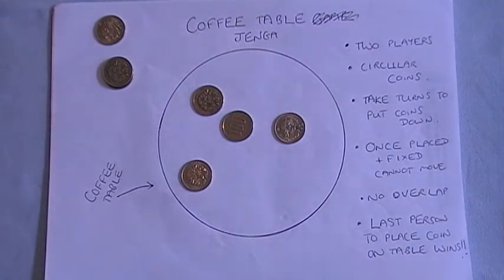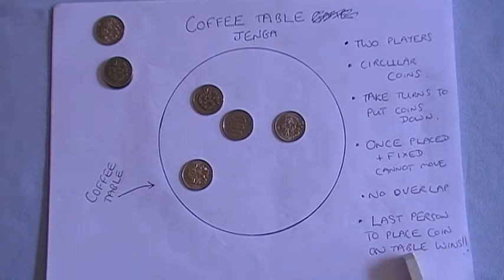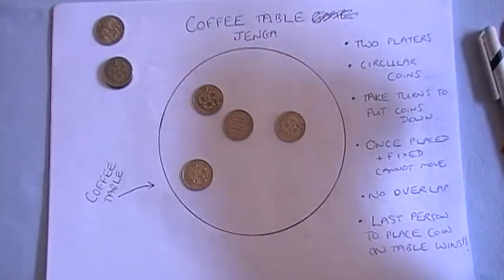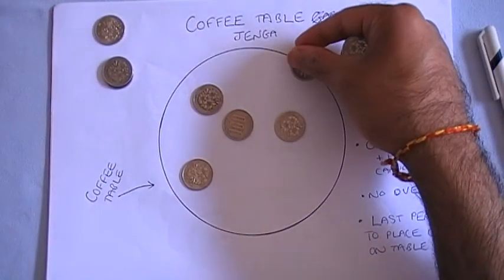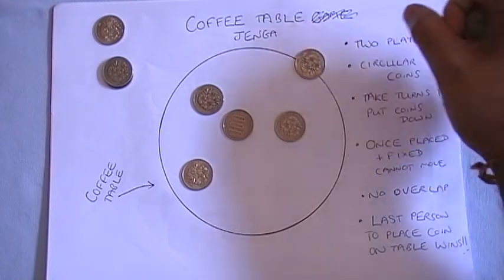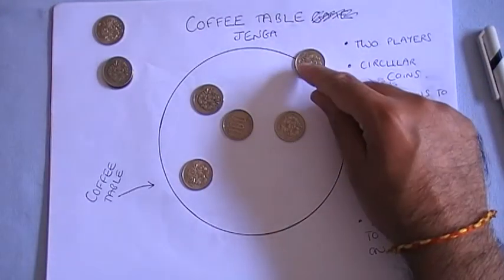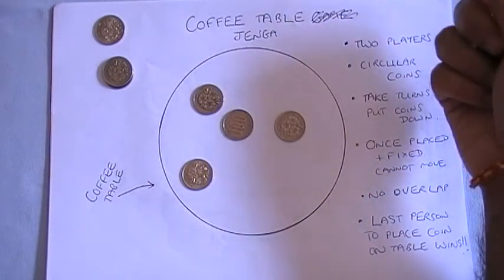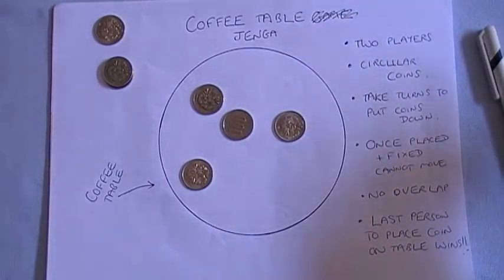And the last person, the object of the game is the last person to put a coin on the table that doesn't fall off the edge wins. So what's going to happen is that we're going to keep on putting coins down and eventually we'll reach a point where there's no space left over. Somebody tries to put a coin on the edge there and it will fall off, and so they're the loser and the other player wins.